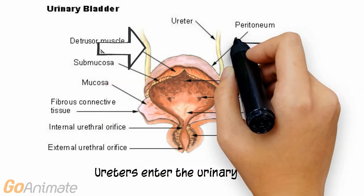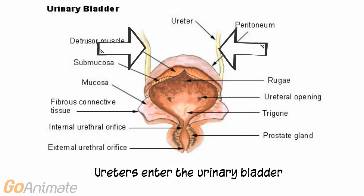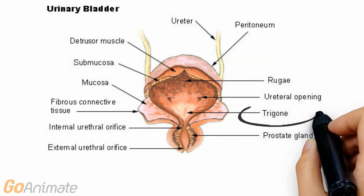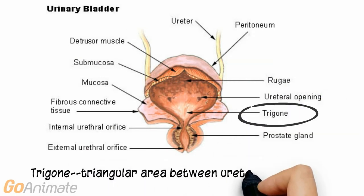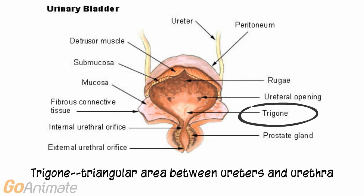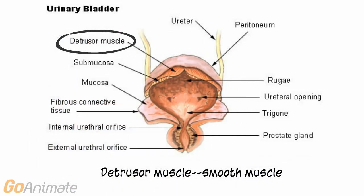The ureters carry urine to the urinary bladder. The area between the ureter connections to the bladder and the urethra is called the trigone area. An area of smooth muscle called the detrusor muscle surrounds the bladder.